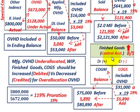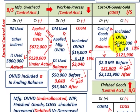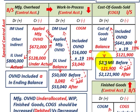Now let's move to cost of goods sold. Whatever amount we had in finished goods would have been credited out and debited here in cost of goods sold. The overhead included in the cost of goods sold ending balance was $641,800. Take that times the 19% proration rate and you get $121,900. Add that back to the ending balance before proration, which was $2,000,000, and you get an ending balance of $2,121,900 after adjustment.